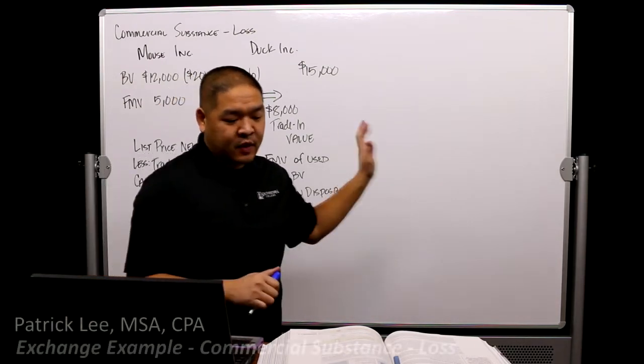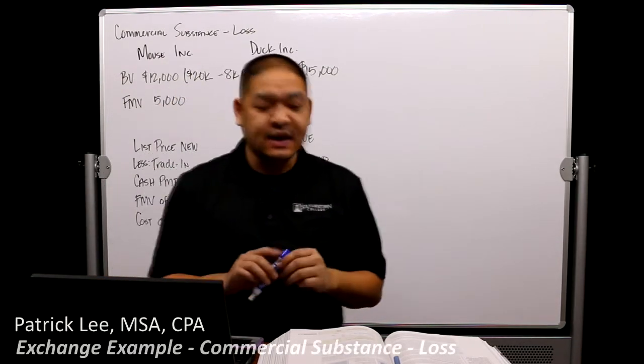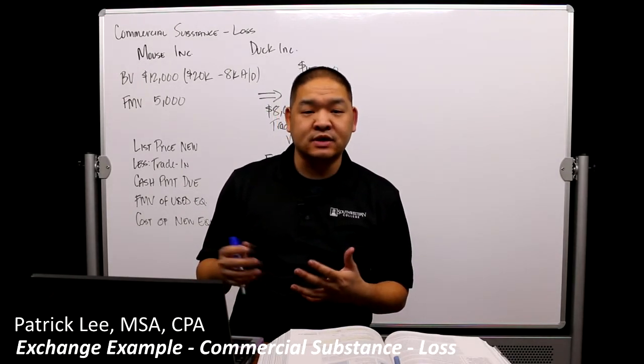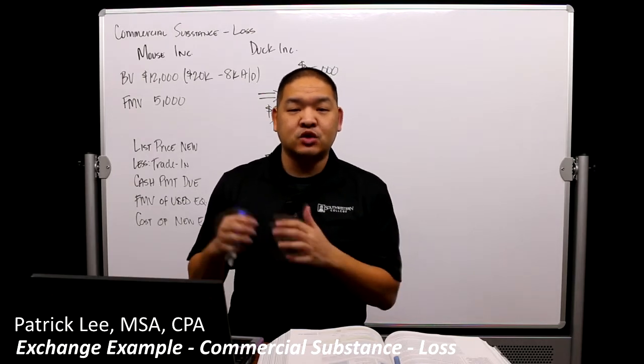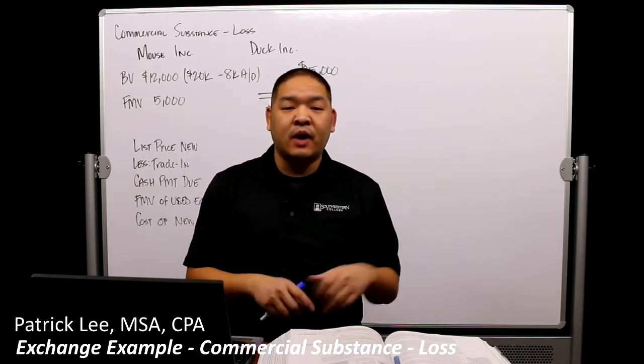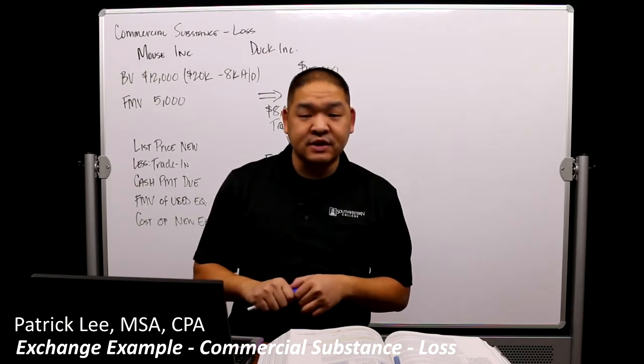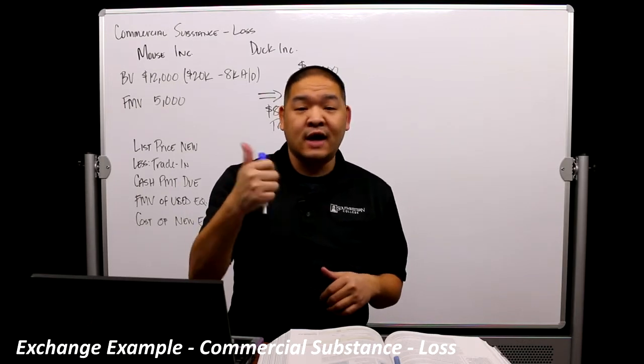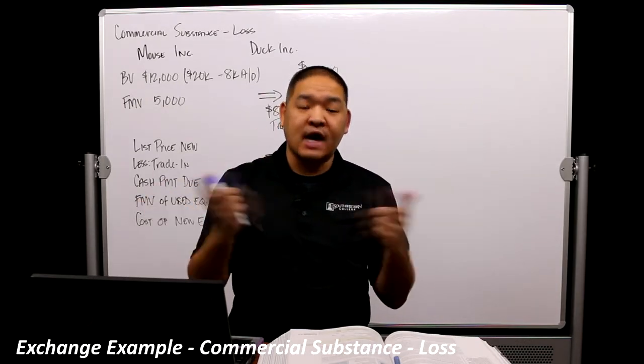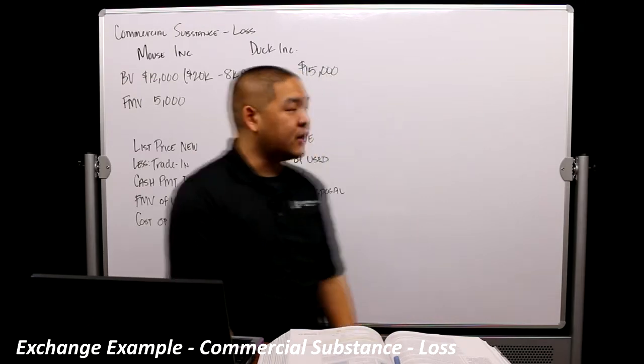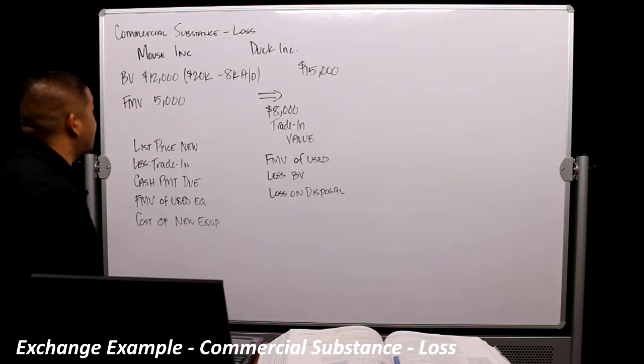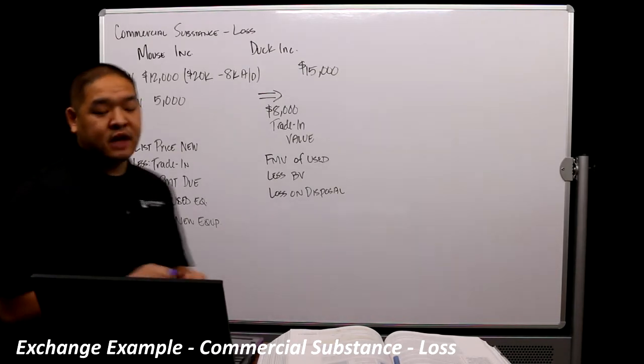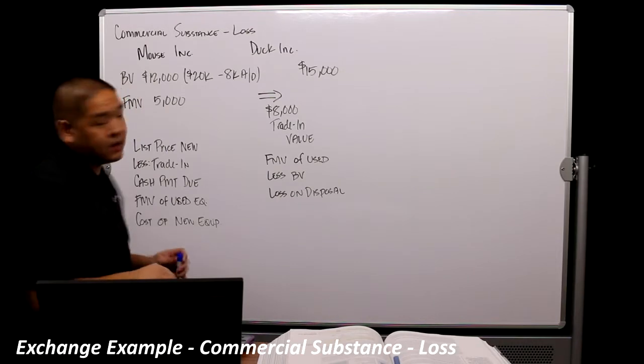All right, in this video we're going to go through an example with exchanges of non-monetary assets. So what we talked about is this idea of commercial substance, and commercial substance tells us that when we exchange one asset for another, but it increases our revenue or economic position over time, then we will book automatically the loss or the gain when that transaction happens or that exchange happens. We're going to go through an example here that we got through in class, but with a little bit more depth and detail for this video so that you can understand it on your own time. So let's go through this example here.